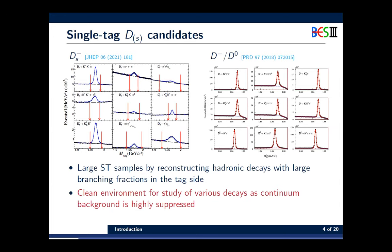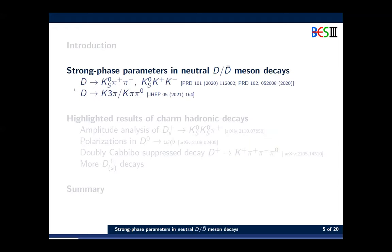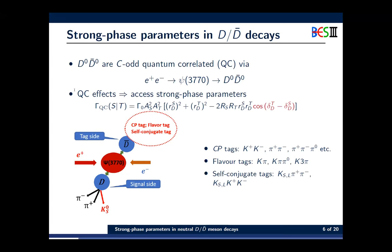Example fits for the Ds and D mesons are shown. With single tag events, we can have a very clean environment for study of various decays, as the continuum background can be highly suppressed by reconstructing the D candidate on the single tag side. For the strong phase parameter measurement, the neutral D-meson pairs produced at near threshold are quantum correlated and in C-odd states.